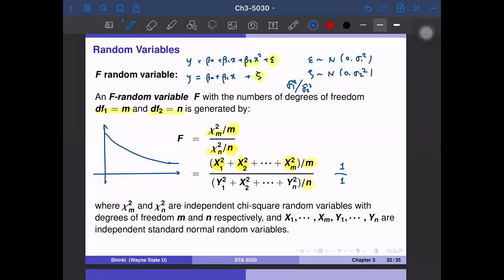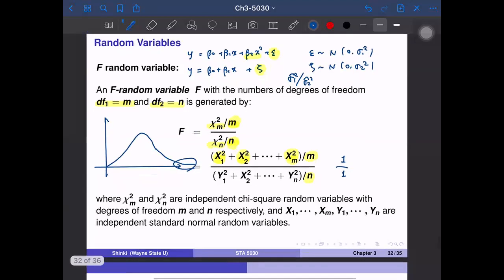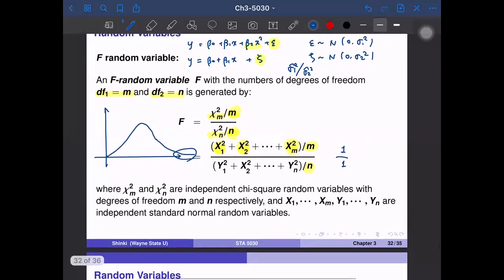If df_1 and df_2 are both large, we have almost this kind of normal distribution but with a slightly heavier tail on the right-hand side. This is the idea of F distribution and the definition of F distribution.